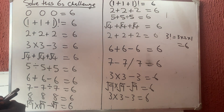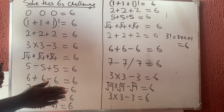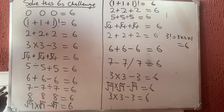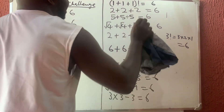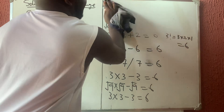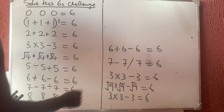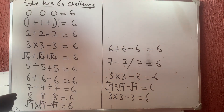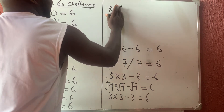They just told us to use mathematical operations and not to add any number — and we are correct with factorial. Now, for zero, zero, zero: what can you do to get six? I'll leave that one for you to solve.